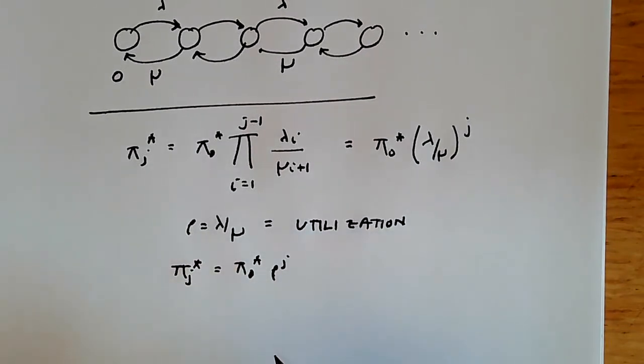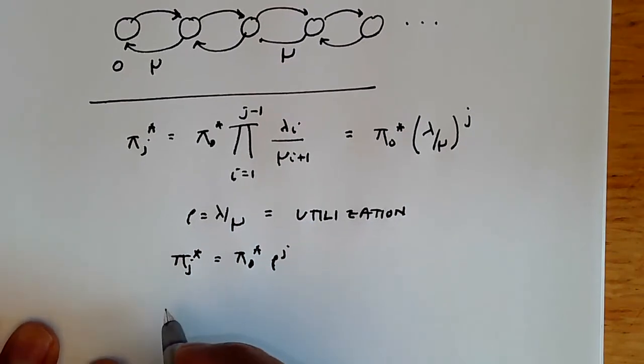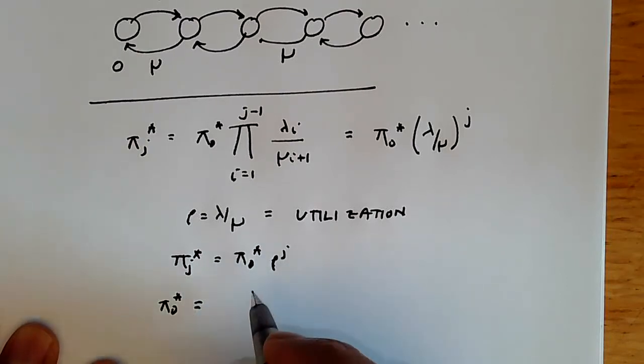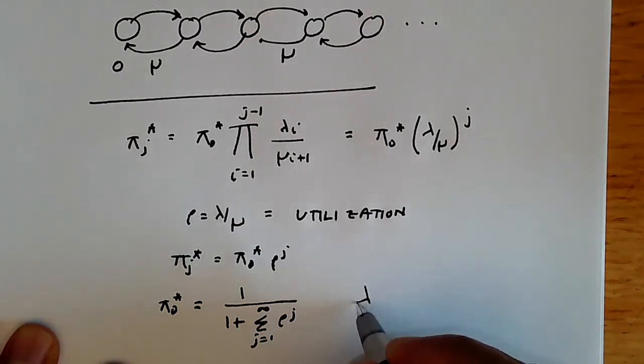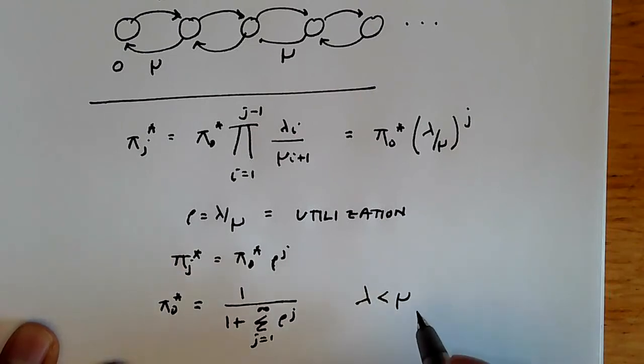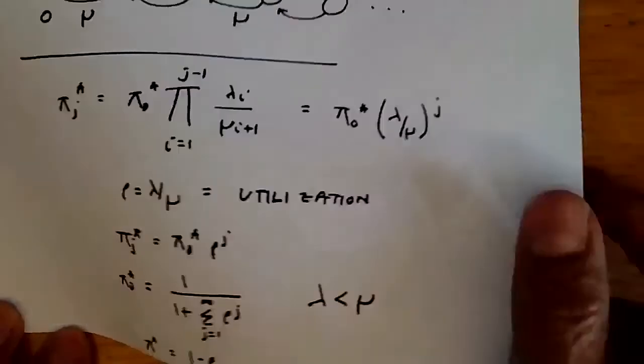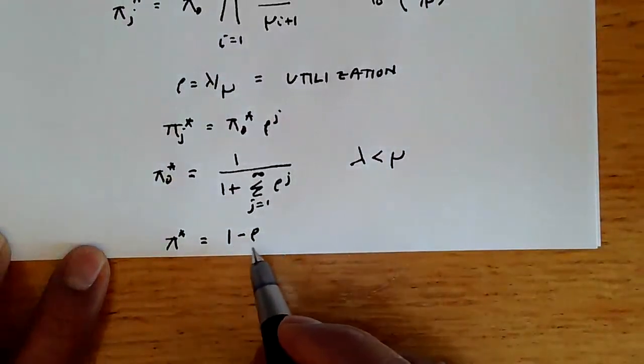What about pi zero star itself? Skipping the intermediate step, we can find that pi zero star, the long-term probability of being in state zero, is given by 1 over 1 plus sigma j equals 1 to infinity rho to the j. When lambda is less than mu, which is the condition for convergence, because we always need to make sure that the arrival rate is less than the service rate, then this denominator will reduce to nothing more than 1 minus rho. We get this nice equation that the probability of being in state zero is 1 minus utilization.